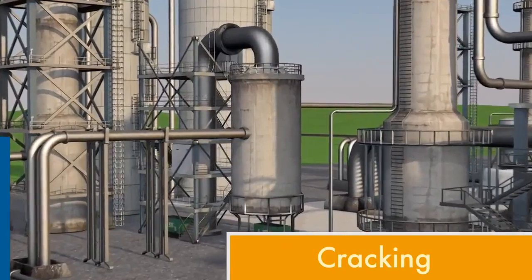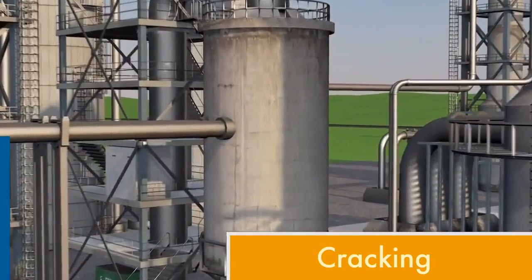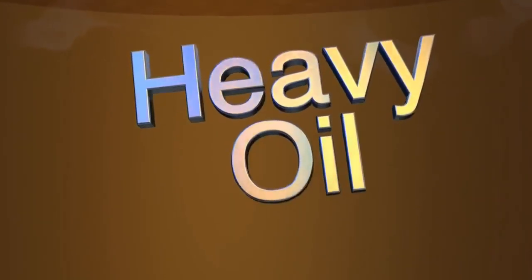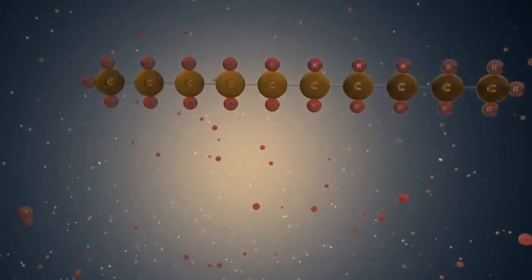A process called cracking is used to maximize the usefulness of heavy oil. Heavy oil has long strings of carbon and hydrogen molecules.